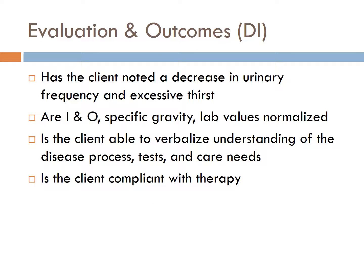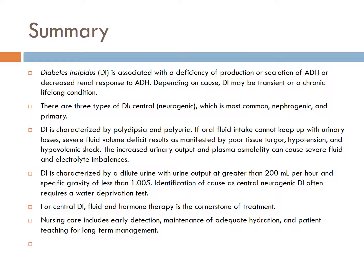Evaluations and outcomes are measured to see if the patient is able to verbalize understanding of the disease process and if the client is compliant with DDAVP. In summary, diabetes insipidus is associated with deficiency of production or secretion of ADH. We went through the different types of DI, the manifestations — one of which is dilute urine with output greater than 200 ml per hour — and nursing care, which includes early detection, maintenance of adequate hydration, and patient teaching for long-term management.